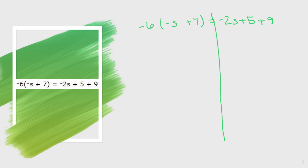Starting on my left-hand side, the only thing I really have to do is distribute. So I take my negative 6 and multiply in. Negative 6 times negative s — it's a negative times a negative, so it's going to be a positive 6s. Then we have negative 6 times positive 7, which will be negative 42. On the right side, there are no other variables to combine, so I bring down negative 2s. But I can do positive 5 plus 9, and 5 plus 9 is 14, so I write plus 14.